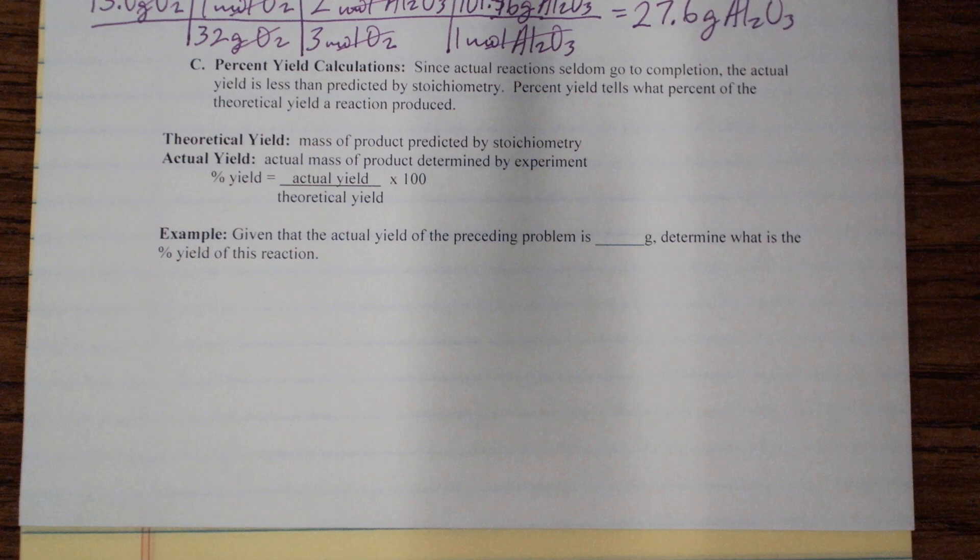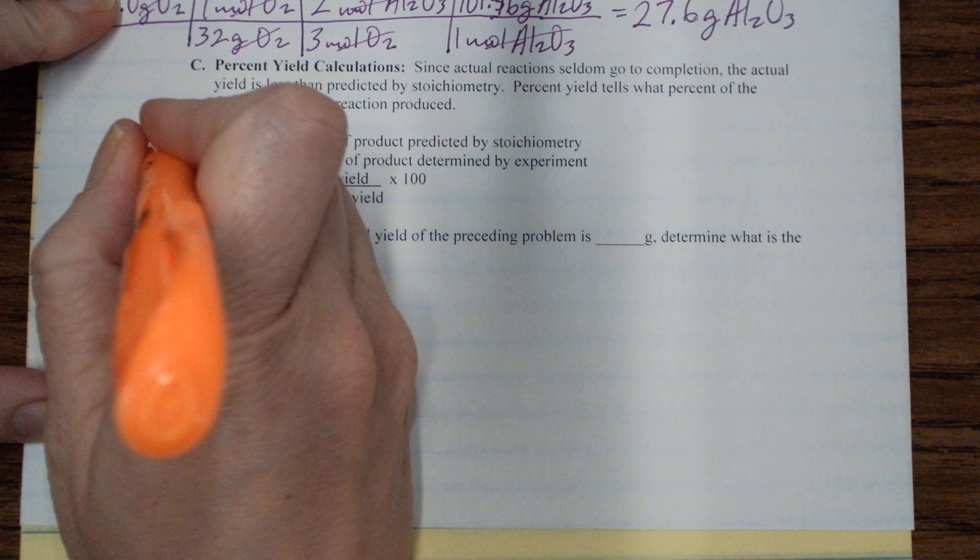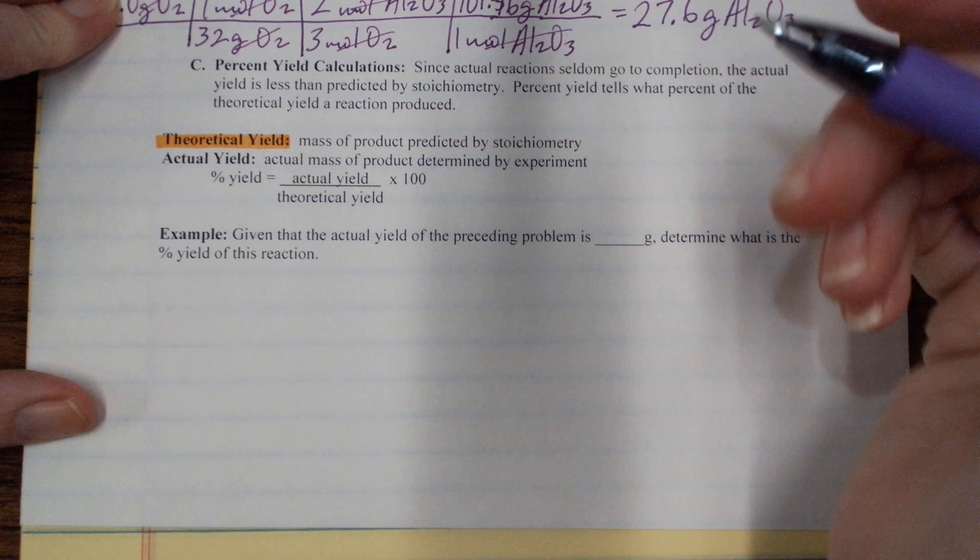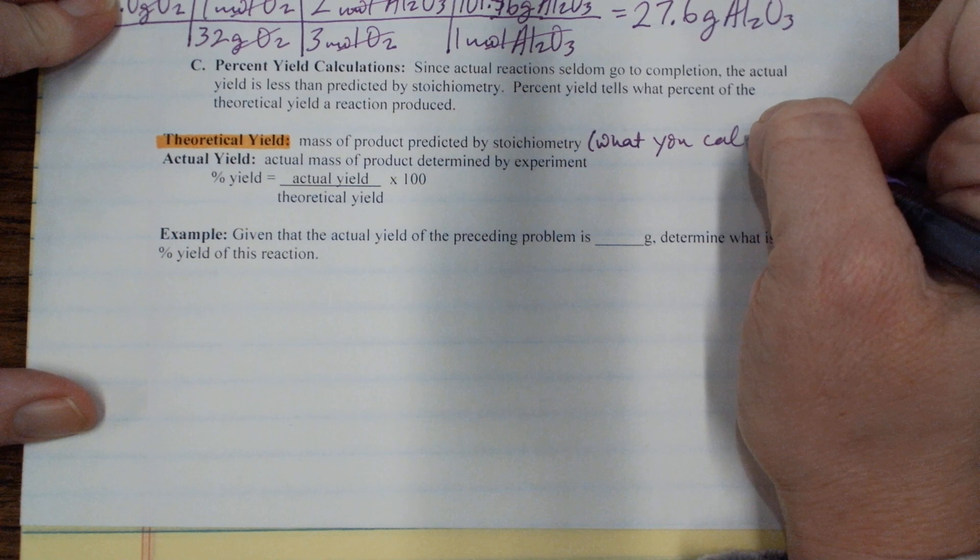So basically, you have to have calculated a theoretical yield typically beforehand. So a theoretical yield is the mass of product predicted by stoichiometry. So this is what you calculate.